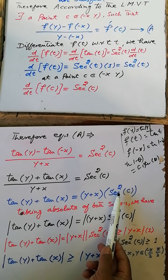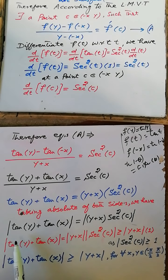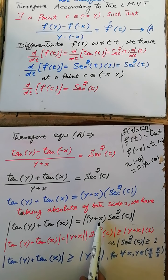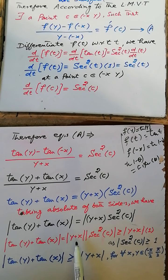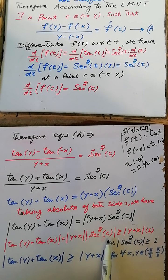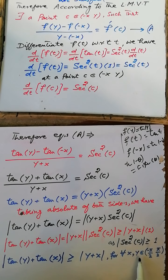Taking the absolute value of both sides: |tan(y) + tan(x)| = |y + x| · |sec²(c)|, which equals |y + x| · |sec²(c)|. Since |sec²(c)| ≥ 1, therefore |tan(y) + tan(x)| ≥ |y + x| · 1, which gives |tan(y) + tan(x)| ≥ |y + x| for x, y belonging to this open interval. This is our required result.